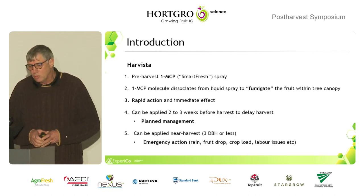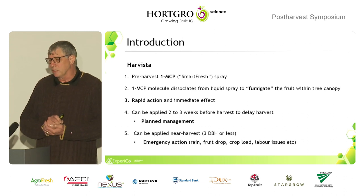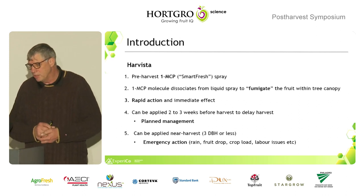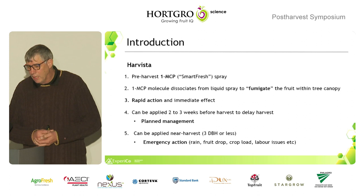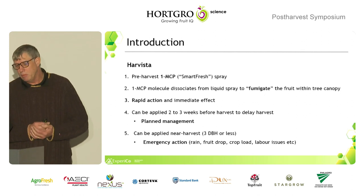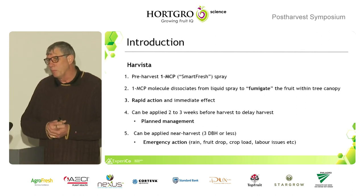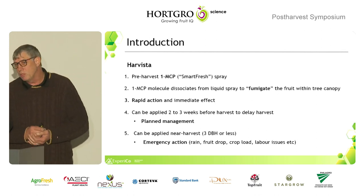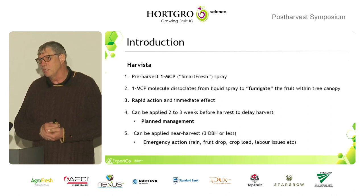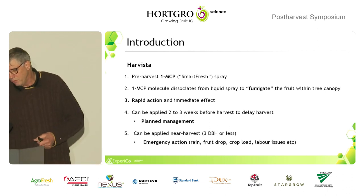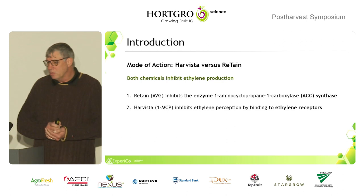In terms of Harvester — what is it? It's really a SmartFresh application in the tree. It's applied, vaporizes, and fumigates around the fruit. It's a very quick and rapid-acting molecule. It can be applied in two ways: as a planned management tool, similar to Retain, applied two to three weeks before harvest, or as an emergency action treatment — because of rain, fruit drop, crop load issues, or labor problems. It's a very versatile tool.